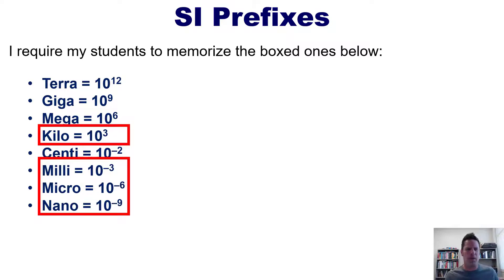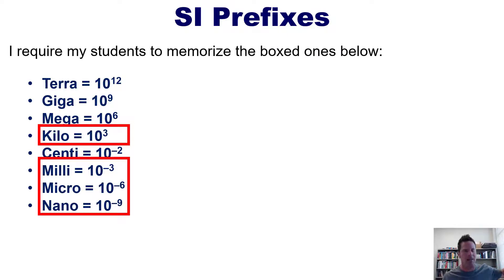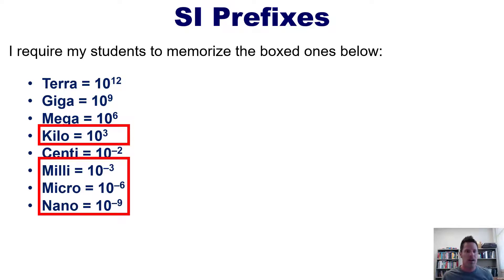Kilo is not too difficult to imagine. Even though we don't use metric very often in the United States, we are at least familiar with a kilometer — a kilometer is a thousand meters. A meter is something you can picture; we've seen meter sticks, they're about three feet in length. And a kilometer is somewhere close to a mile — a mile equals about 1.61 kilometers. So you can picture a thousand meters being present in one kilometer. Therefore, one kilometer is 10 to the third meters.